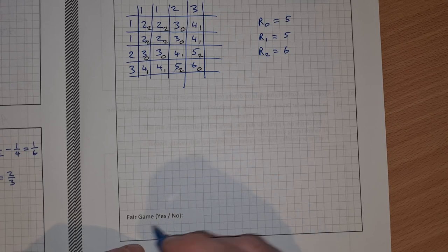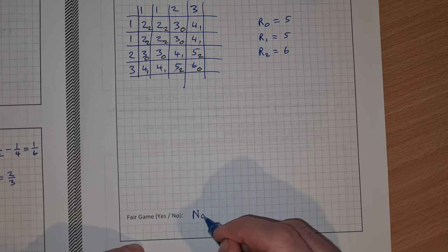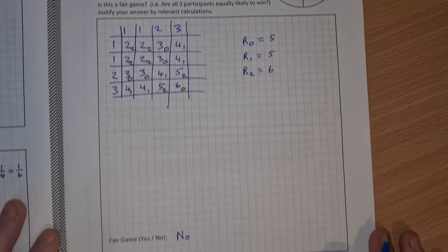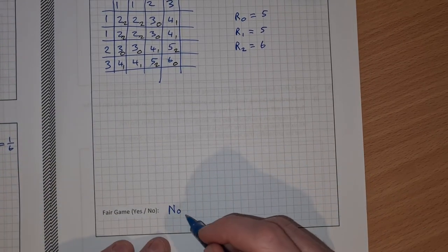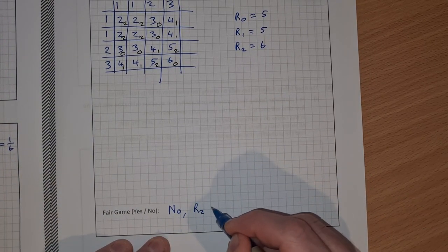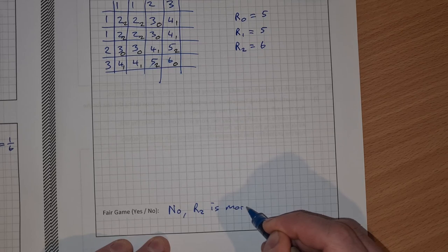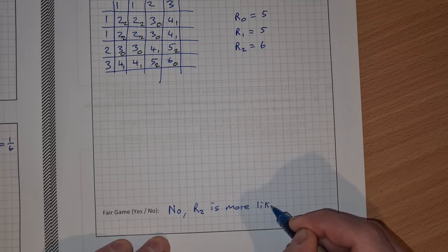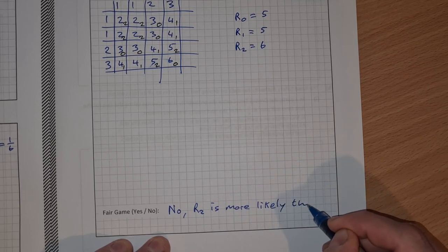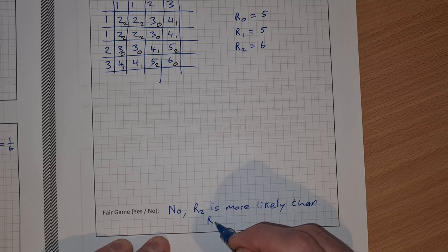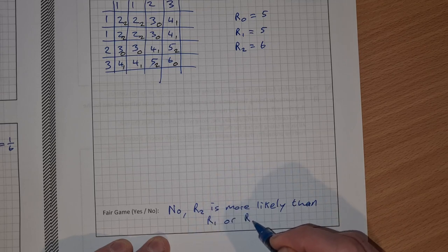So our conclusion here, is the game fair? The answer is no. They don't ask for a reason, but we'll just give a reason that remainder 2 is more likely than remainder 1 or remainder 0.